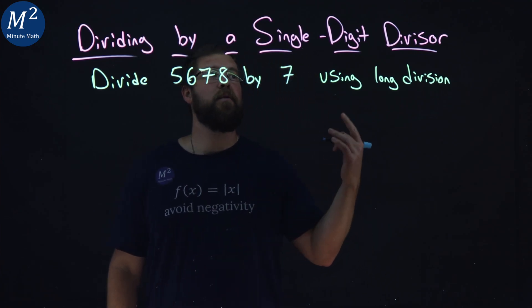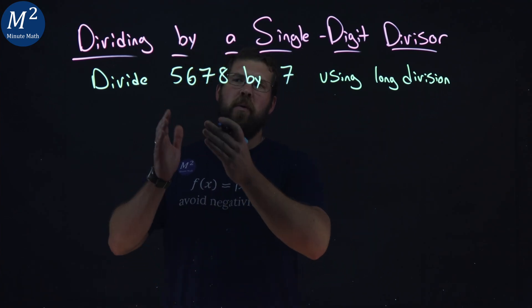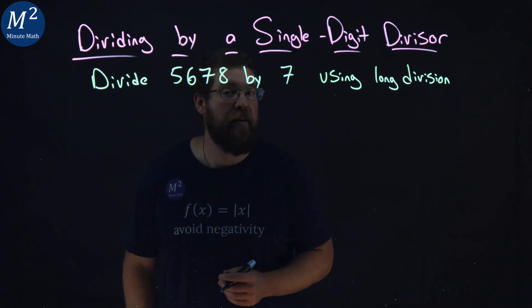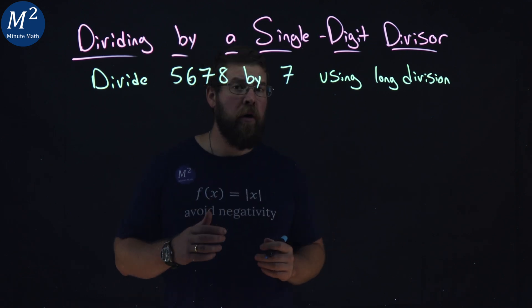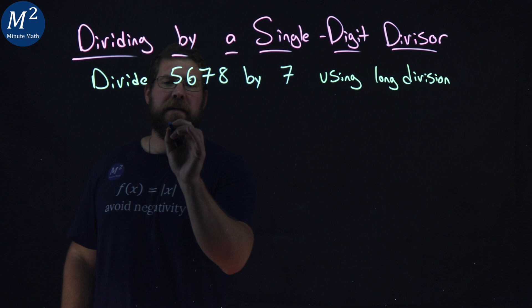Let's learn about dividing by a single digit divisor. We want to divide 5,678 by 7 using long division. So we're going to set it up like this.